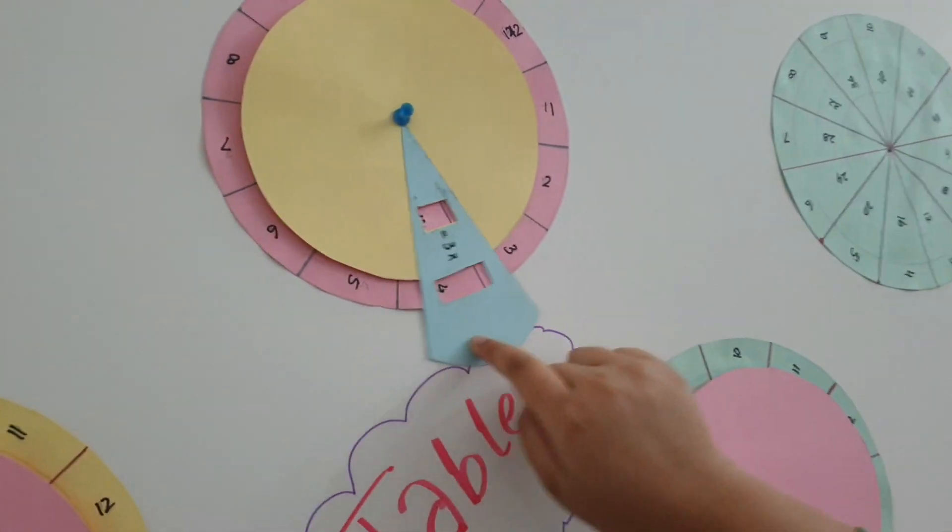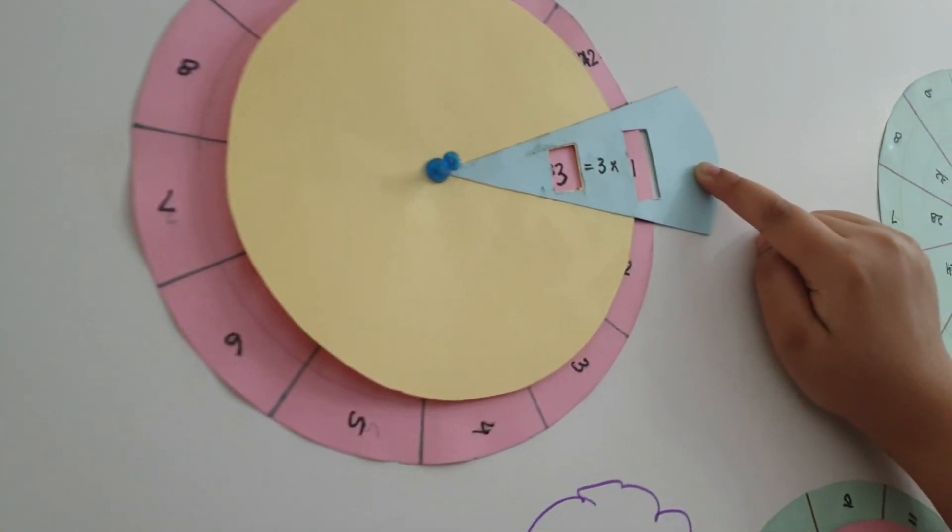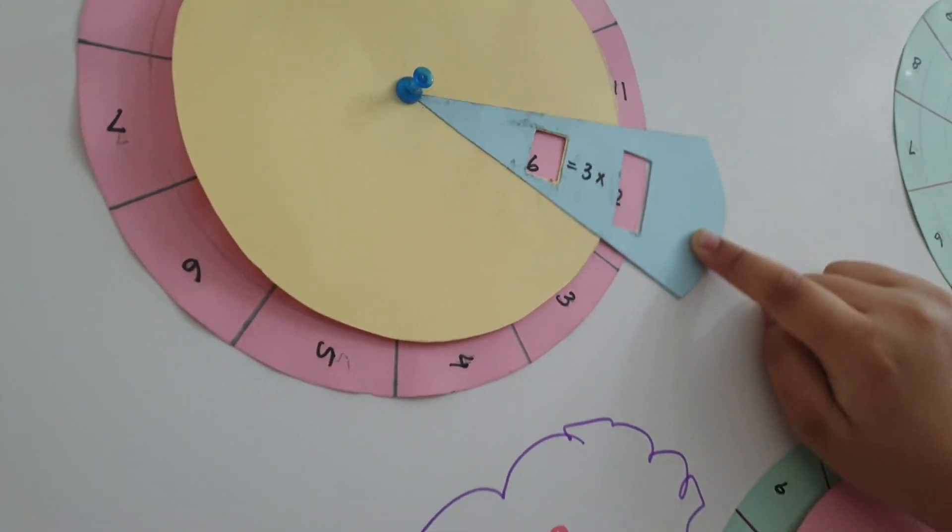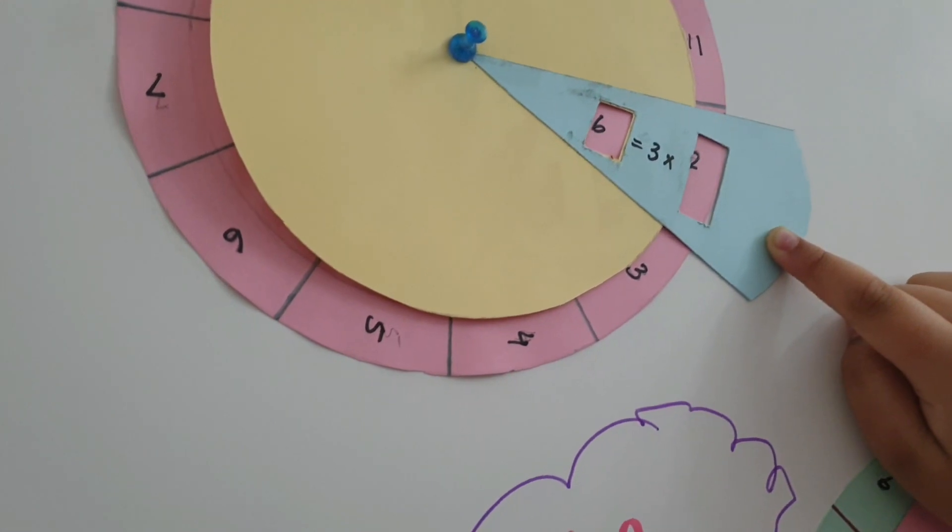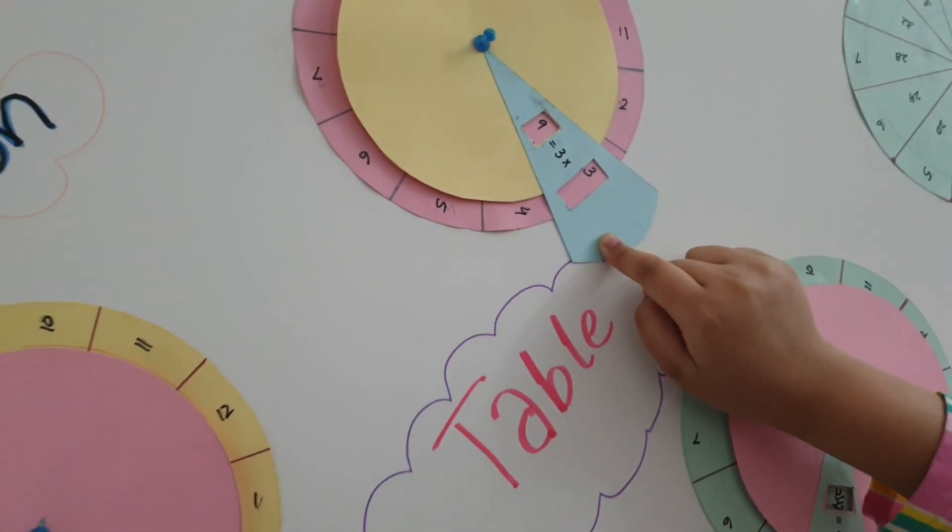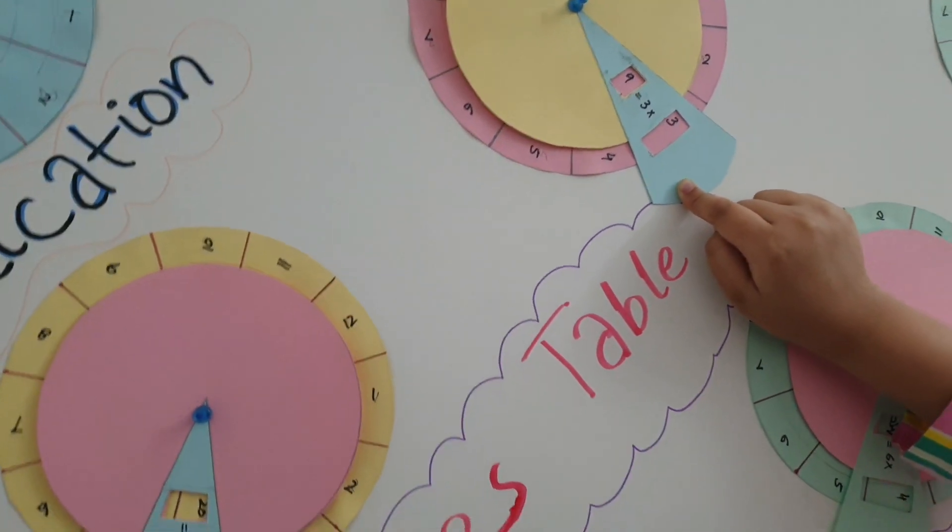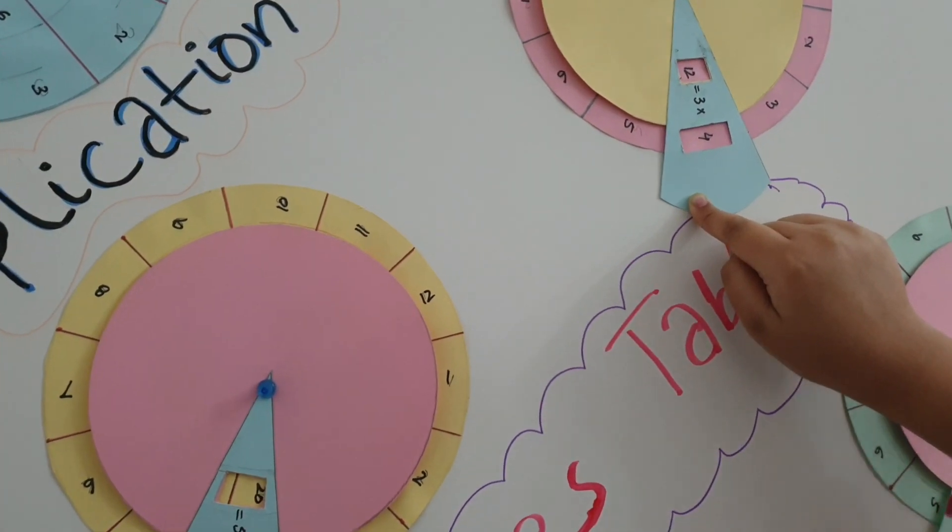So we are starting from 1. 3 1s are 3, 3 2s are 6, 3 3s are 9, 3 4s are 12, 3 5s are 15.